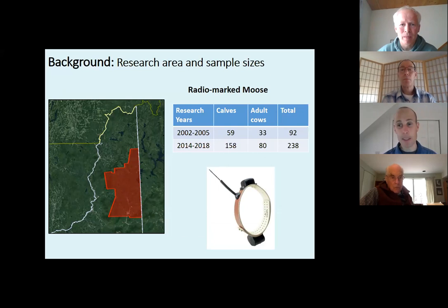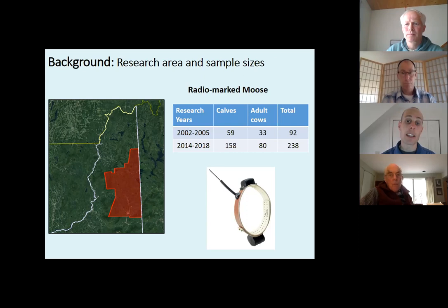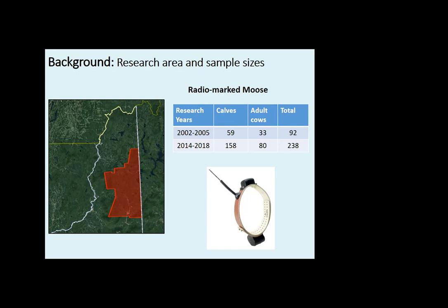The first research project we'll refer to tonight was 2002 to 2005 with 92 radio-marked moose, and then most recently 2014 to 2018 with 238. This occurred in what we call the North region of New Hampshire for moose management — roughly a 10 to 20 mile radius around Milan. This area was selected for both research projects because it's really core moose habitat in the state, where moose are most likely to persist long-term, and we have very good access.